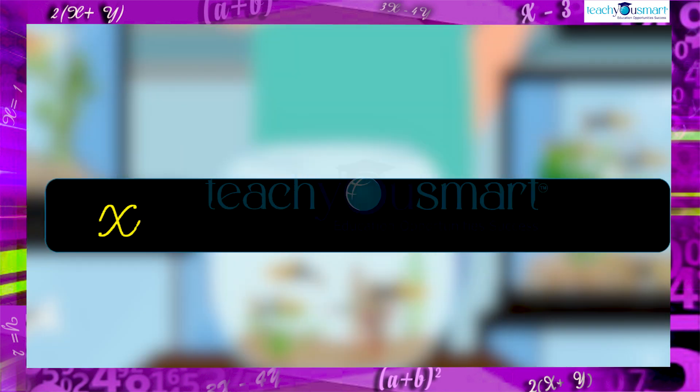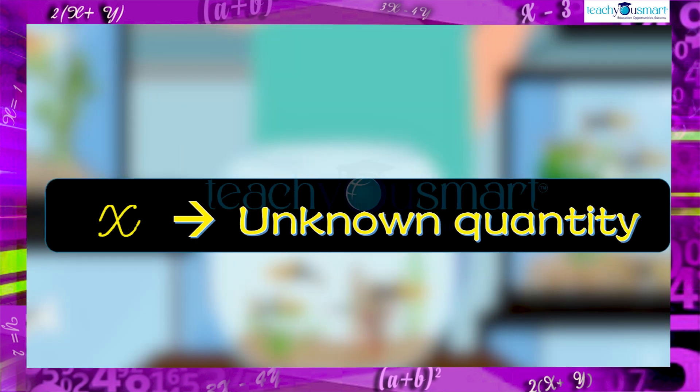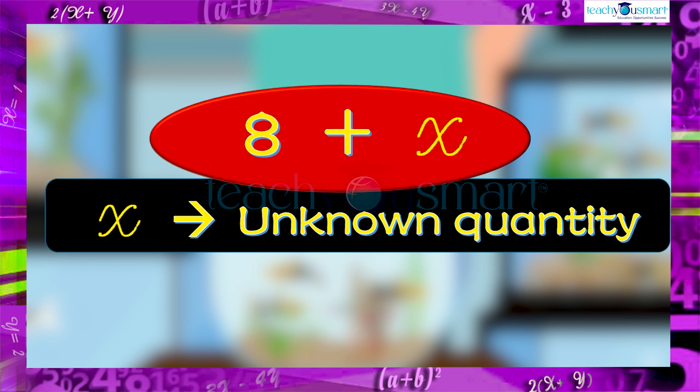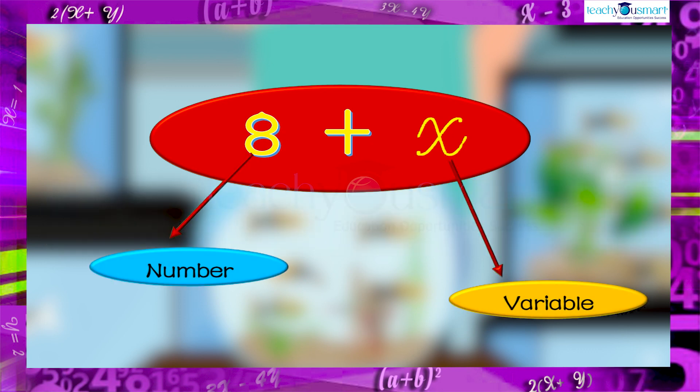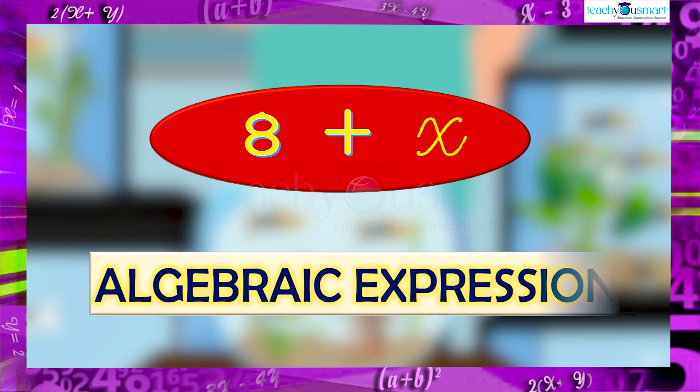If we take the unknown quantity as x, then we can write the total fishes in the tank before eight fishes were taken out was eight plus x. This is an expression which contains both number and variable. Such an expression is called an algebraic expression.